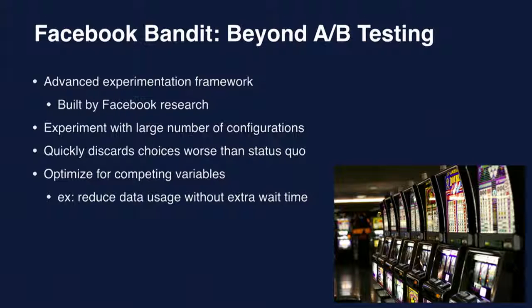Going beyond basic testing, I want to talk about Facebook Bandit. It's built by Facebook Research — pretty complex. It's an advanced experimentation framework called Multi-Armed Bandit — this is Facebook's version. What it allows you to do is experiment with a large number of configurations and very quickly decide how to narrow down to just the configurations likely to produce the best results. It also very quickly throws out configurations that are producing worse results than the status quo, so you don't have experiments out there that actually degrade user experience.